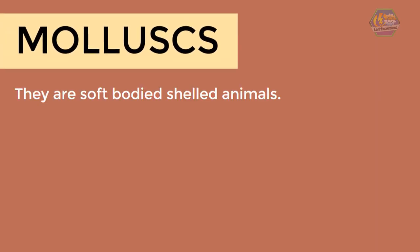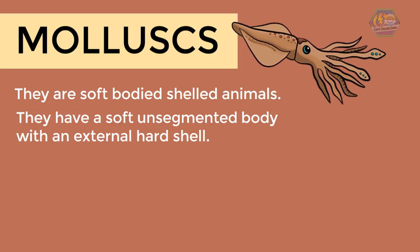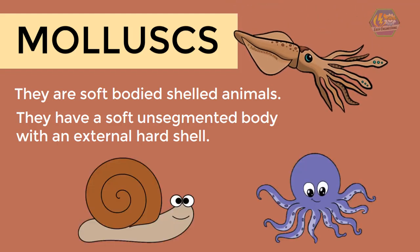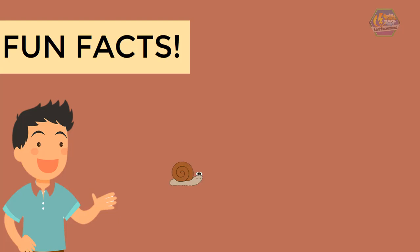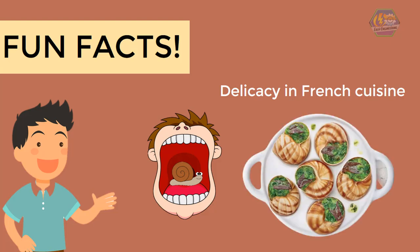Next are the mollusks — soft-bodied sheltered animals with a soft and segmented body and an external hard shell. Some examples are squids, snails, and octopuses. Fun fact: did you know some snails can be eaten? In fact, they are a delicacy in French cuisine called escargot.